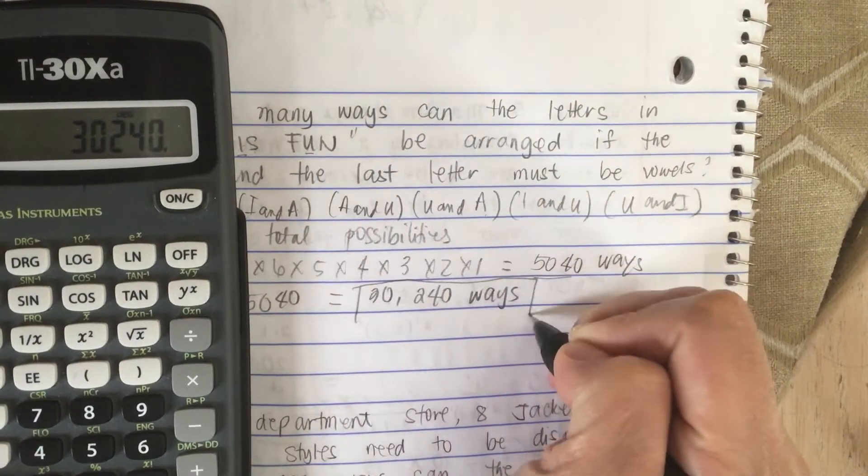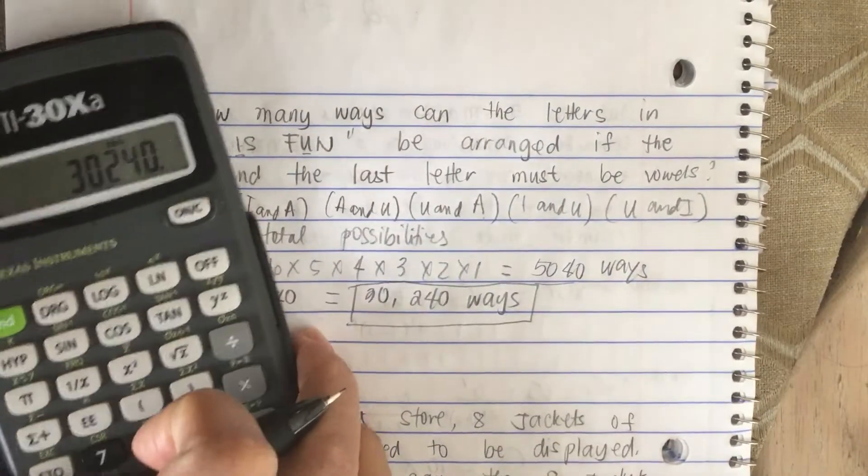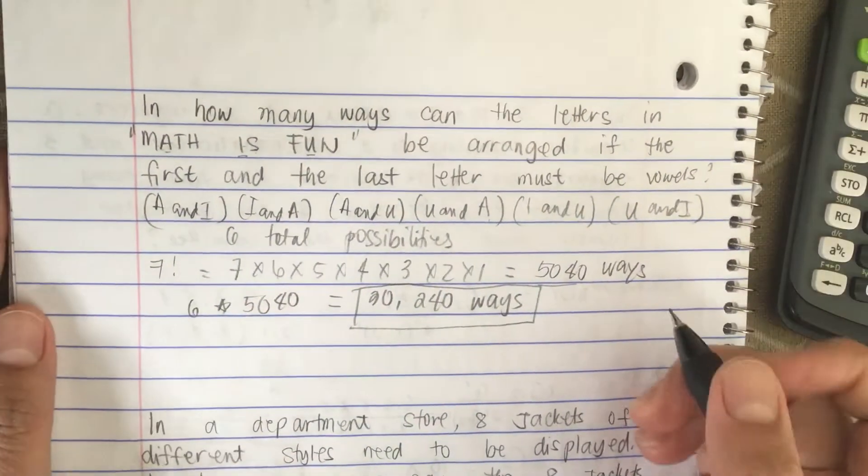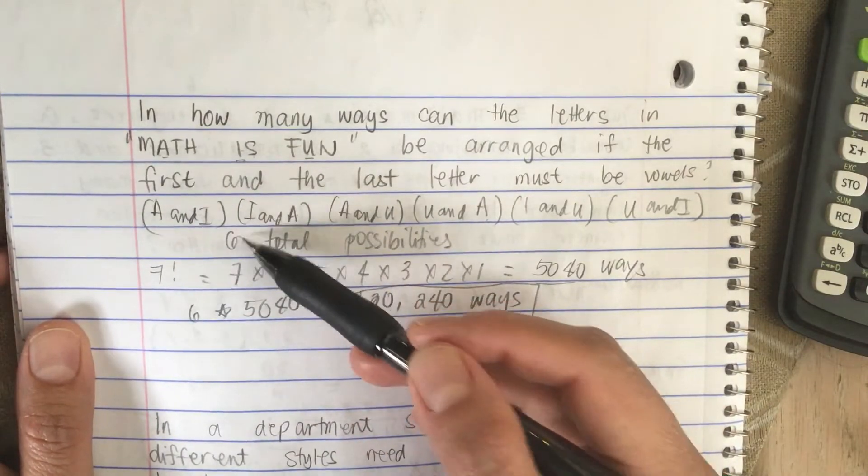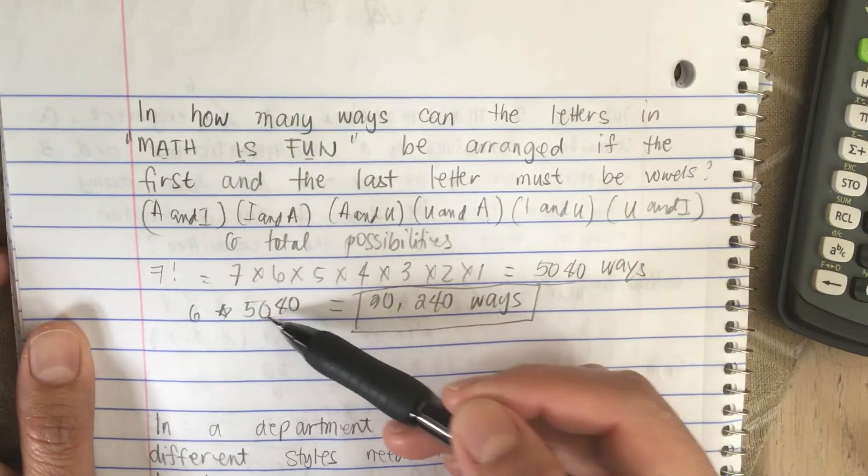So this is the answer to the problem. We multiply this times this.